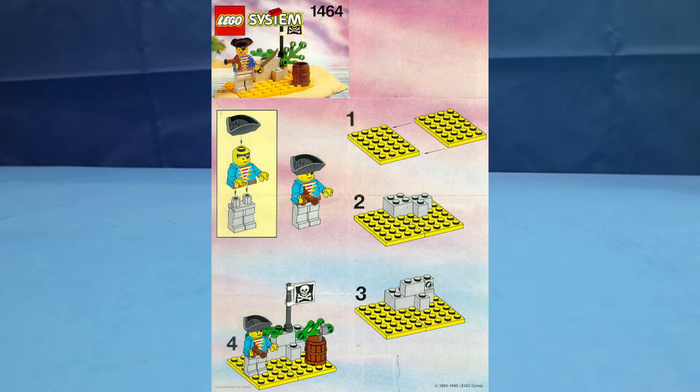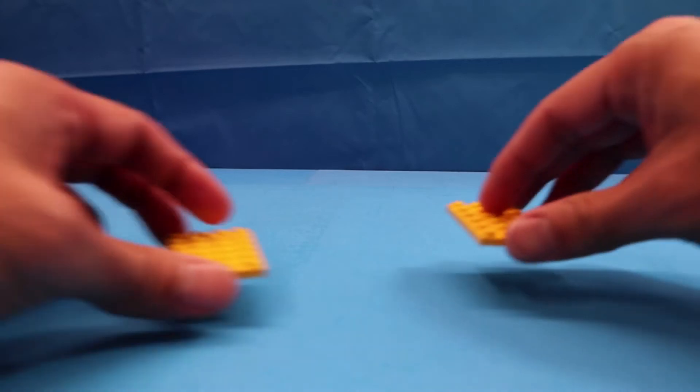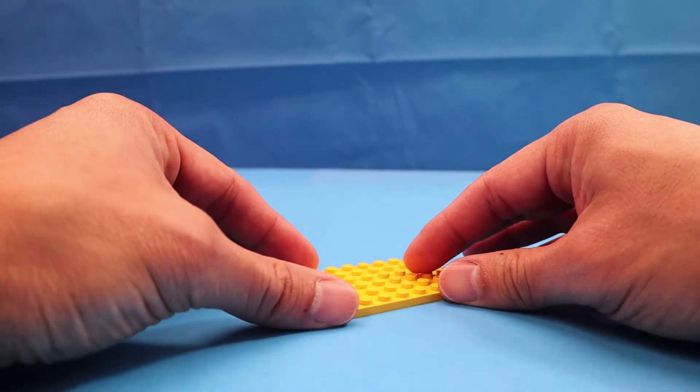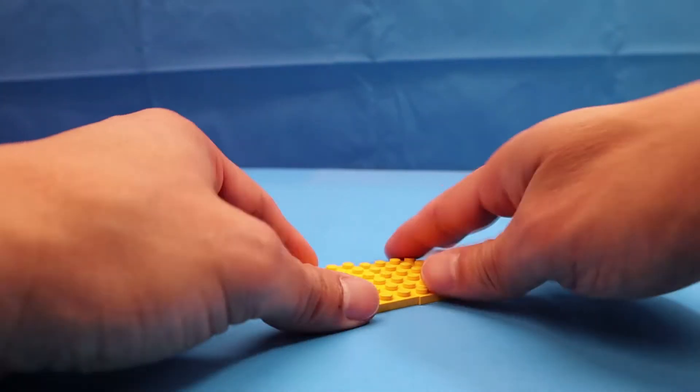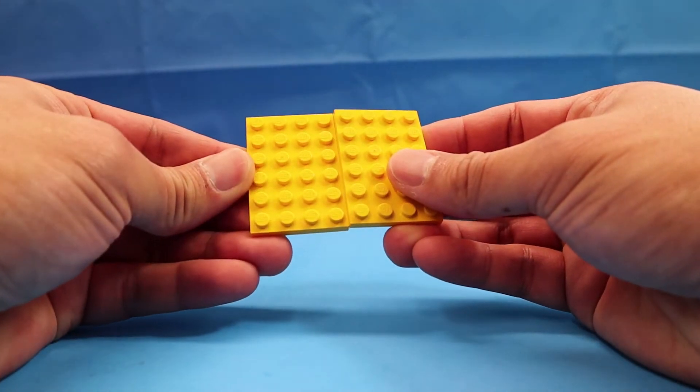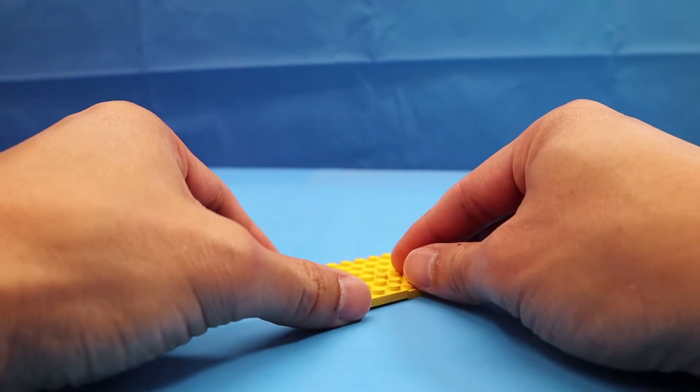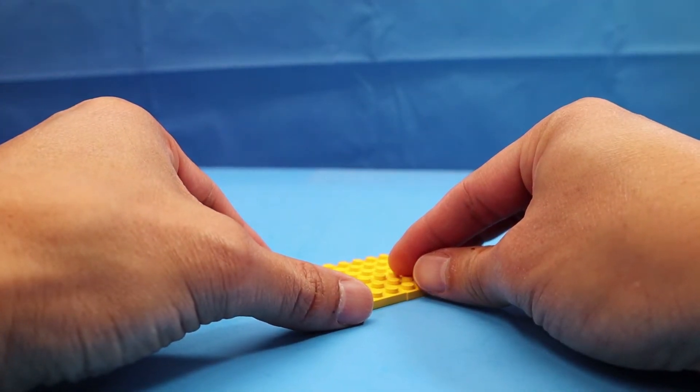I don't have the instructions so I'm going off a website called Lego Instructions or something to that effect. Let's see, I don't know why they just didn't give you a 6x8 but for whatever reason you have two of these.